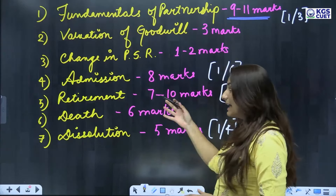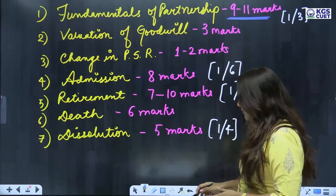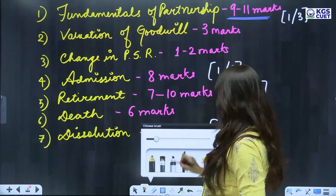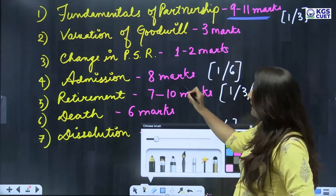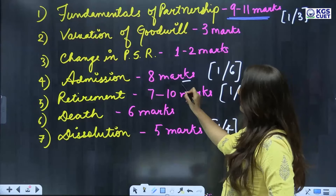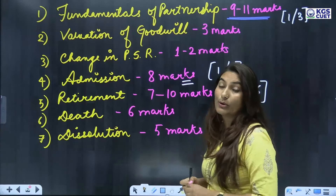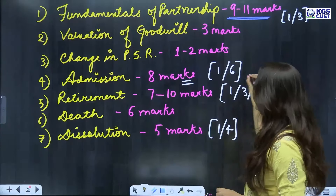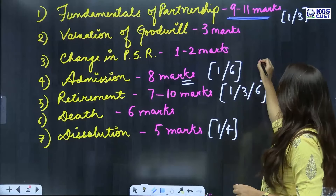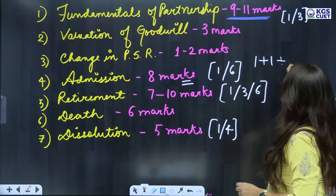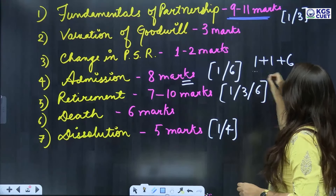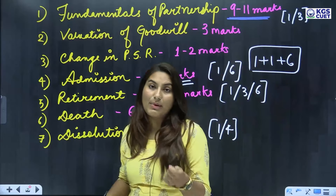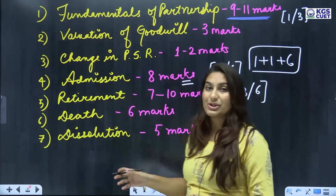Then there is Admission of Partner. In admission of partner, you can get around 8 questions. That can be 1 mark or 6 marks — maybe 1 plus 1 and your 6 marks, so 2 questions of your partner. You can also get a big 6-mark question from the admission topic.